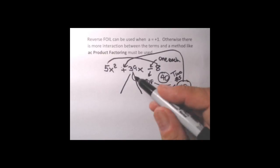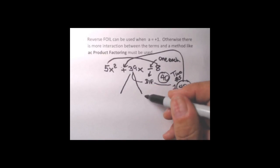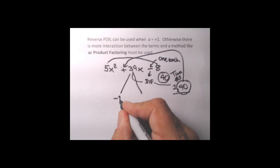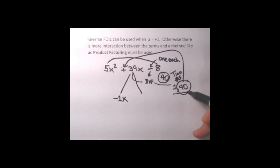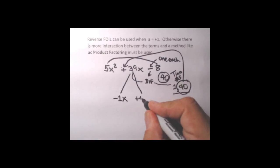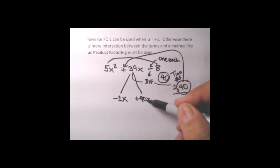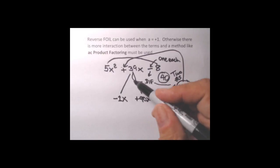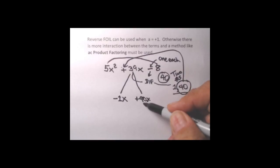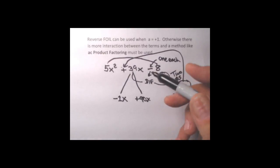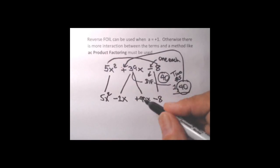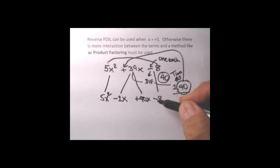So the 40 goes with plus and the 1 goes with minus. I'll write minus 1x, and then plus 40x. Notice that if we combine these two together, we do get plus 39x — that always has to be true. And these are actually the correct rainbows; we are in effect un-multiplying this expression to get back to what we started with. Bring down the last term and the first term exactly as they are. The only term we split was the center term, using our winning numbers.